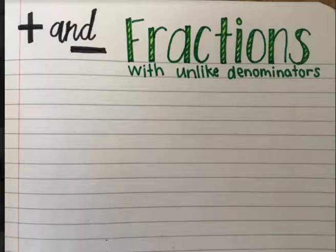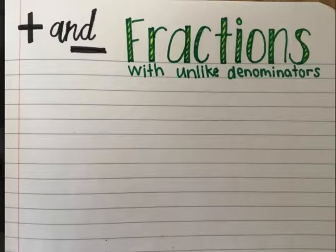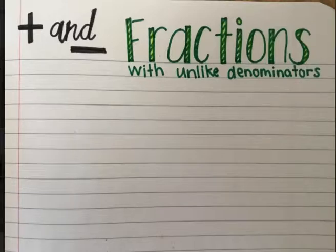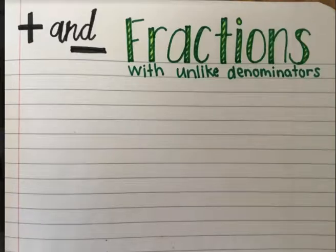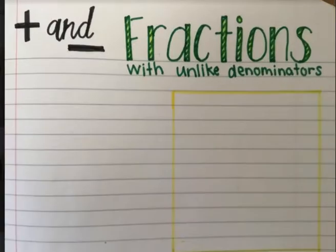Fractions with unlike denominators means that we could have something like two thirds and four eighths. We know that thirds and eighths are not the same size, and we cannot actually add and subtract when they're like that. So we're going to be looking at what we can do to make those calculations. I just drew this box here for a little later to write some important information, things to remember inside.